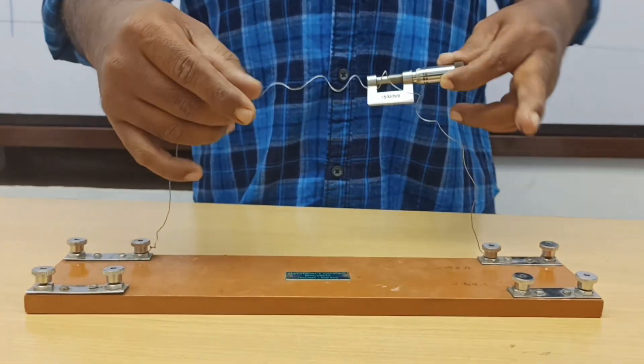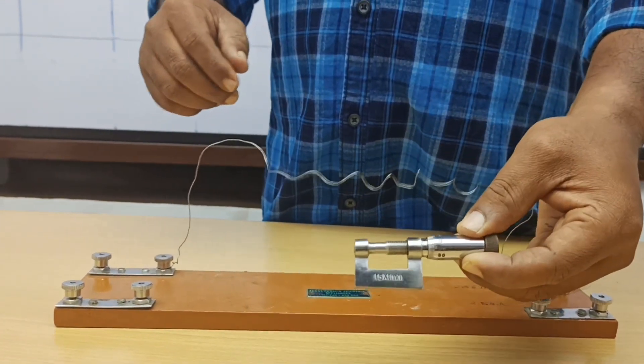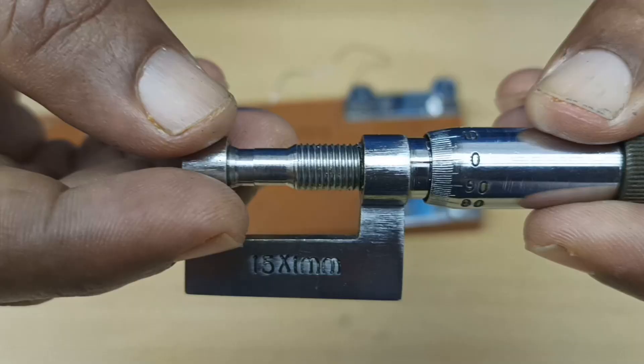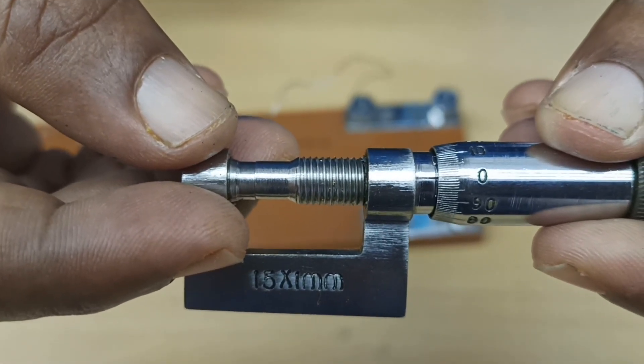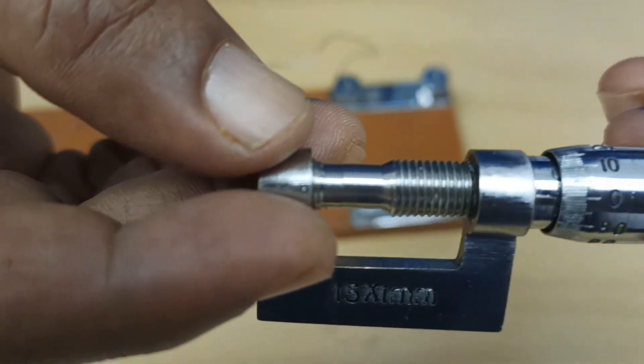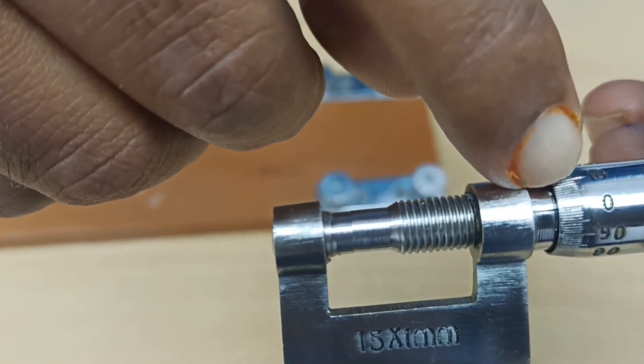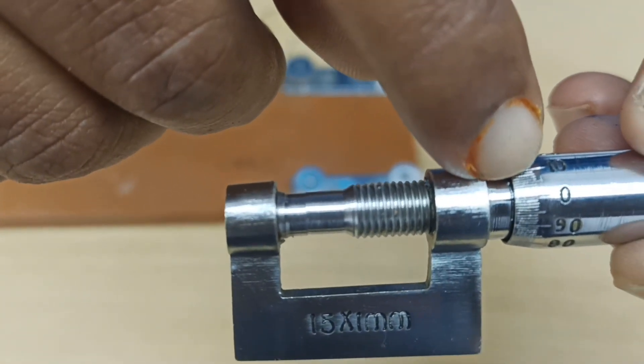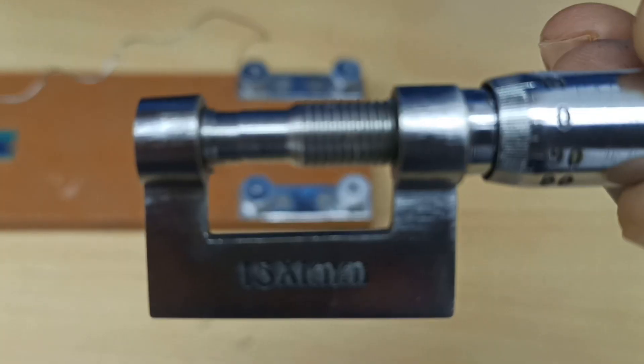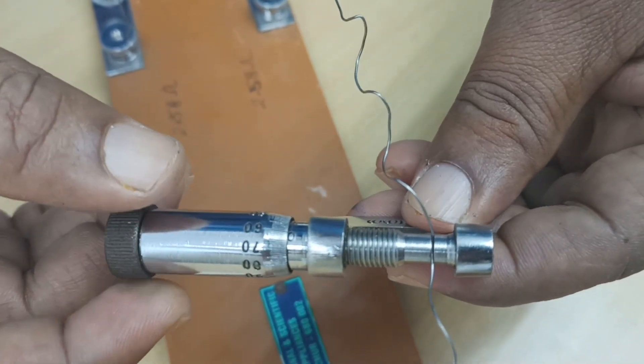Now we have to find the diameter of this wire. For that, using a screw gauge, we are going to find out the diameter of the wire. First, we are taking the zero correction. For this, zero correction is zero. There is no zero correction.